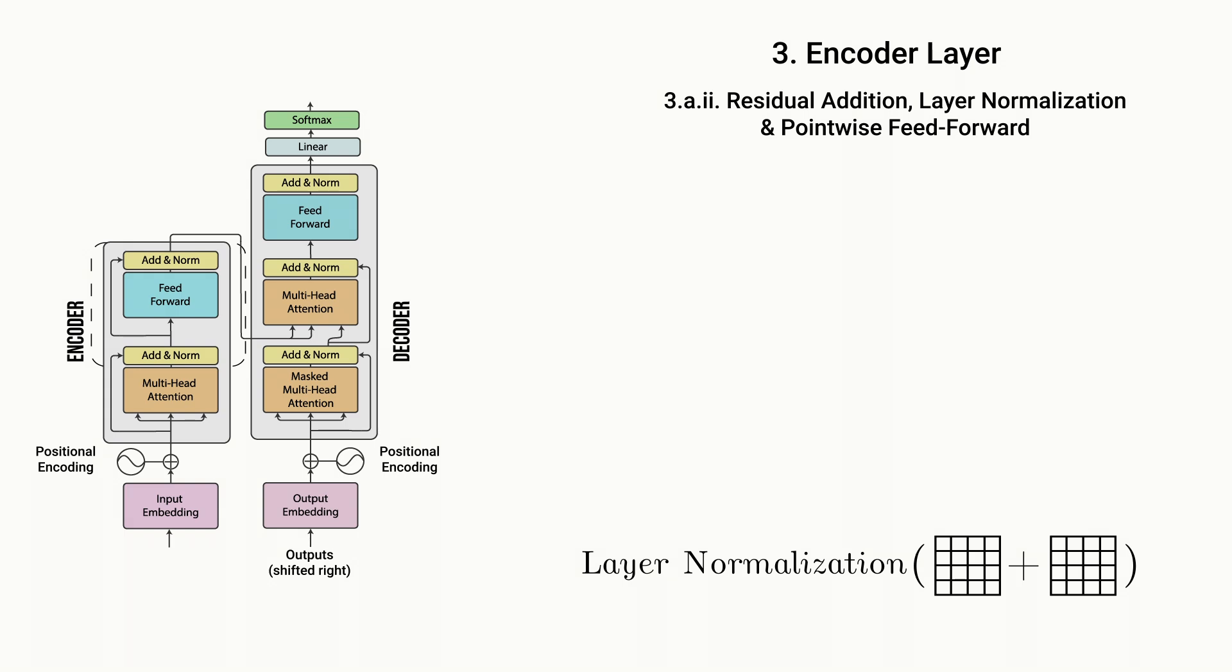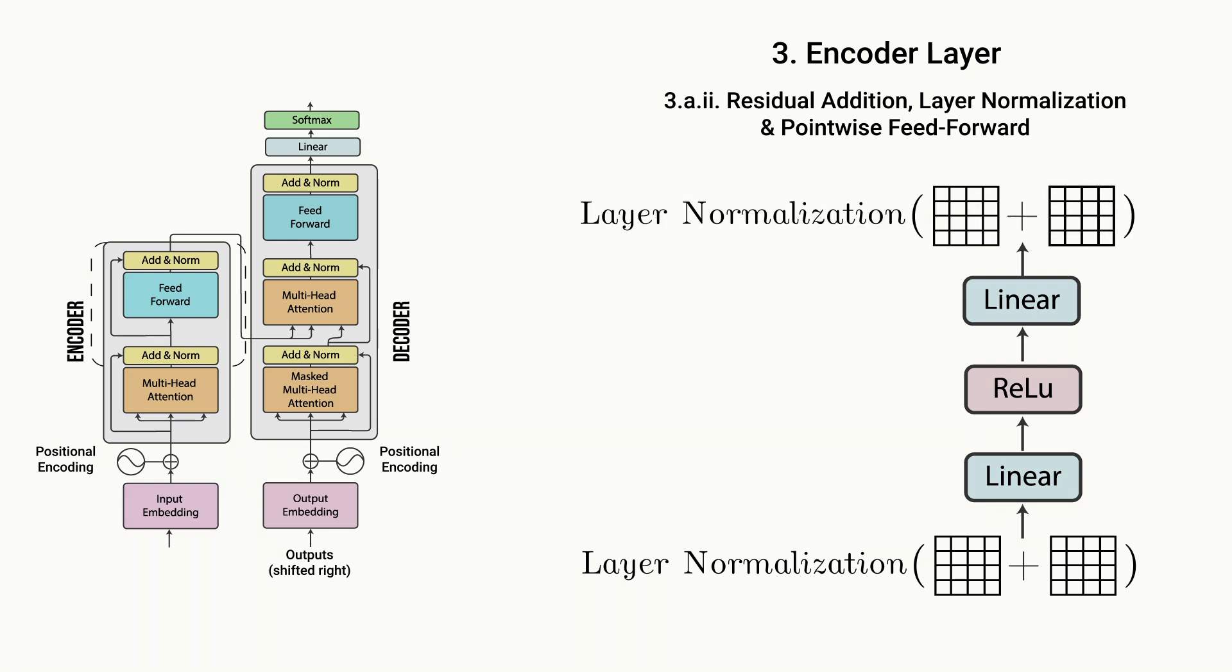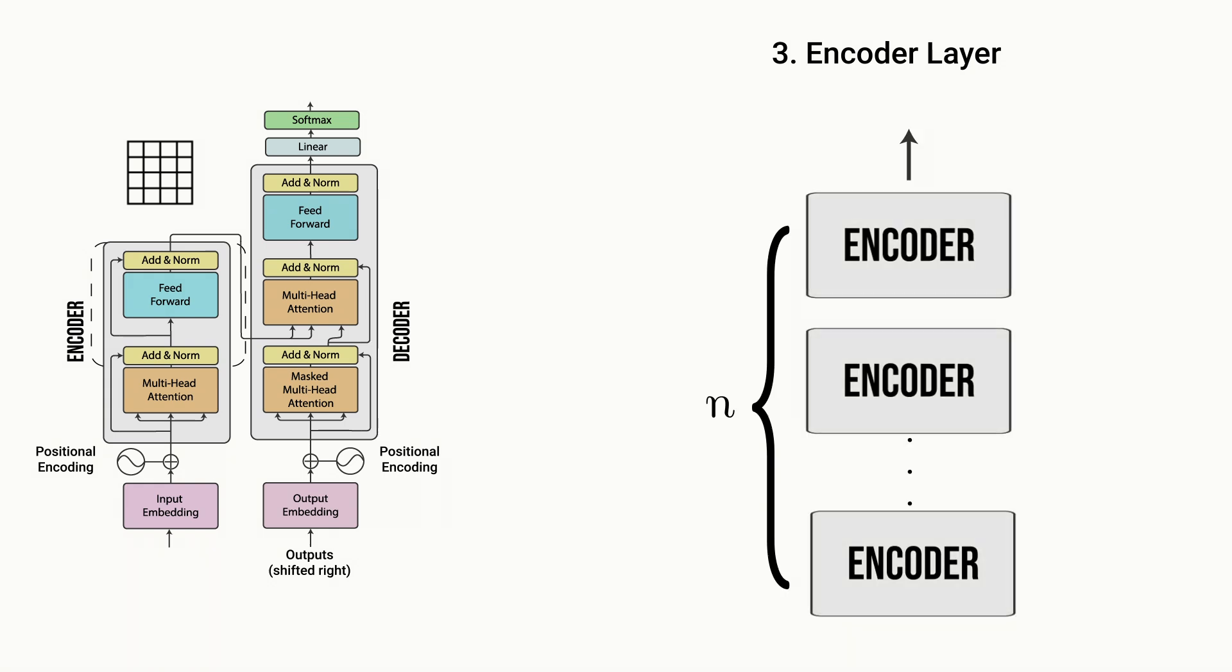This normalized residual output then gets fed into a fully connected feed-forward network, which consists of two linear layers, a ReLU activation in between, and is then residually connected and normalized. And that pretty much wraps up all of the operations that take place in the transformer encoder layer. And then this encoder can be stacked up n times to further encode the input and thereby improve the predictive power of the network.